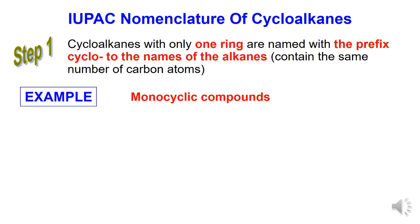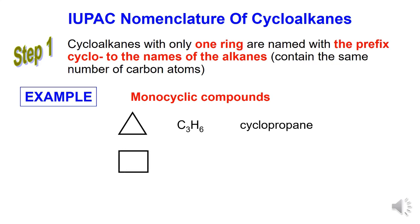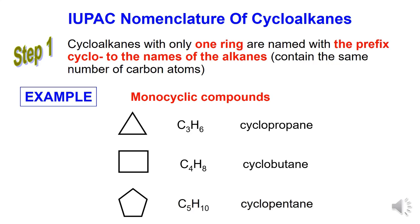Cycloalkanes are named with the prefix 'cyclo' added to the names of the alkane containing the same number of carbon atoms. Examples for monocyclic compounds: Number 1 — the cyclic compound has 3 carbons, formula C3H6, IUPAC name is cyclopropane. Number 2 — has 4 carbons, formula C4H8, IUPAC name is cyclobutane. Number 3 — has 5 carbons, formula C5H10, IUPAC name is cyclopentane.